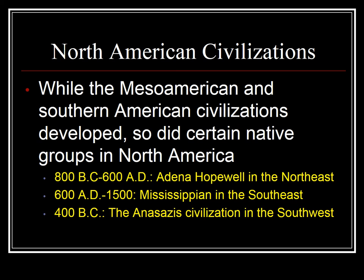We've looked briefly at Mesoamerica and South America. Let's now move up into what we know as the United States and Canada and look at some North American civilizations. While Mesoamerican and South American civilizations developed, so did certain native groups in North America. Between 800 BC and 600 AD, you have the Adena and the Hopewell thriving in the American Northeast. Between 600 and 1500 AD, you had the Mississippian in the Southeast. In 400 BC, you had the Anasazi civilization in the Southwest. There were also Northwest civilizations.